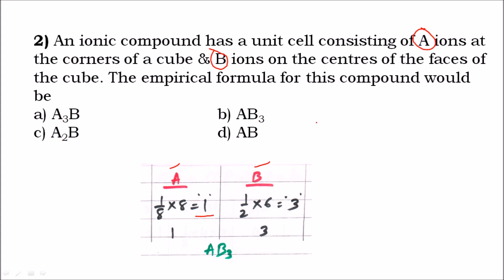B ions are on the centers of the faces. Each face-centered atom is common to two unit cells, so the portion for each unit cell is one-half. A cube has six faces, so one-half into six equals three. B equals three. The empirical formula is AB₃, so the right answer is option B.